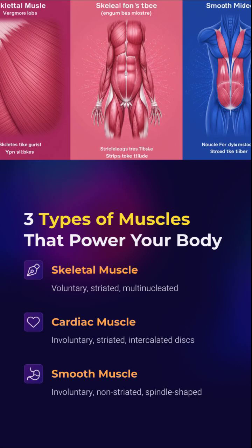Muscle tissue comes in three forms. Skeletal muscle: voluntary, striated, and multinucleated — your will-controlled engine for motion.